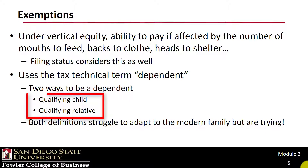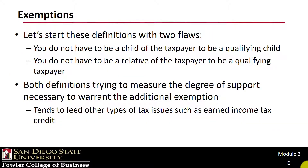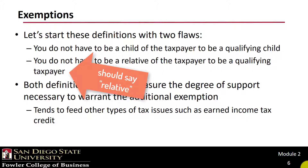There are two ways to qualify as a dependent: either as a qualifying child or as a qualifying relative. Amazingly, you do not have to be a child of the taxpayer to be a qualifying child. And even more impressively, you do not have to be a relative of the taxpayer to be a qualifying relative.